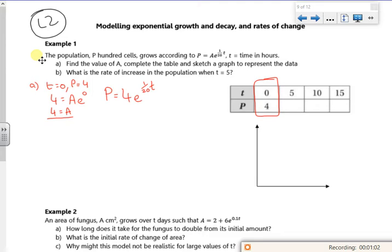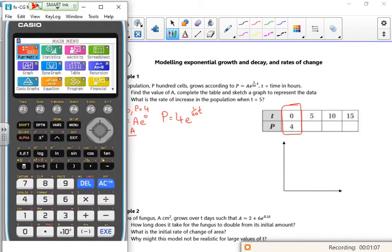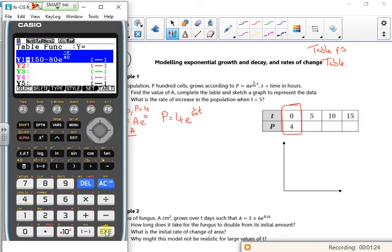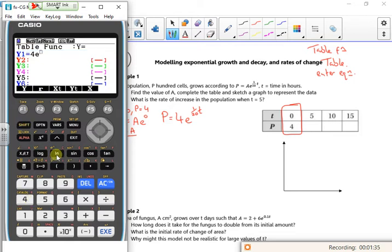I'm going to show you how to use the table function, because I don't think we've used the table function on our calculator. So for the table function, you've actually got this on your normal Casio calculators. So I'm going to go into table. Put in the equation, so I enter the equation, which is 4e^(1/20x).